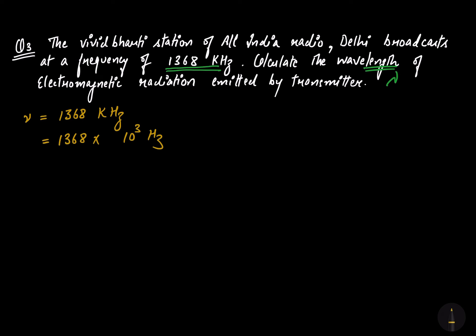To evaluate the wavelength, the formula nu = C / lambda gives lambda = C / nu. The speed of light C is 3 × 10⁸ meters per second, divided by the frequency 1368 × 10³ hertz.